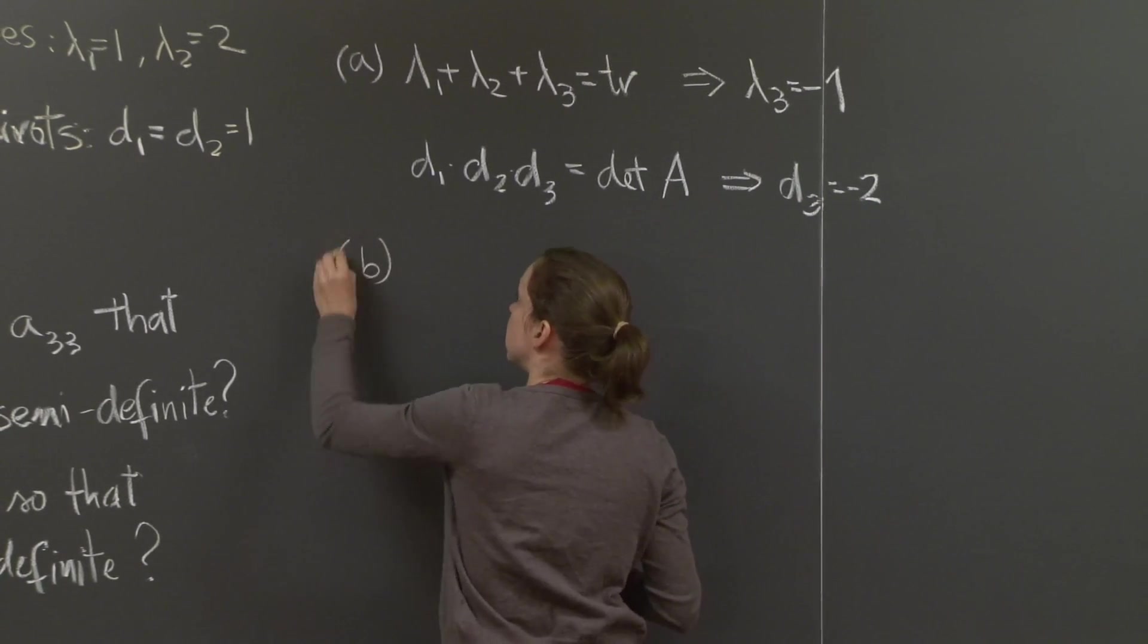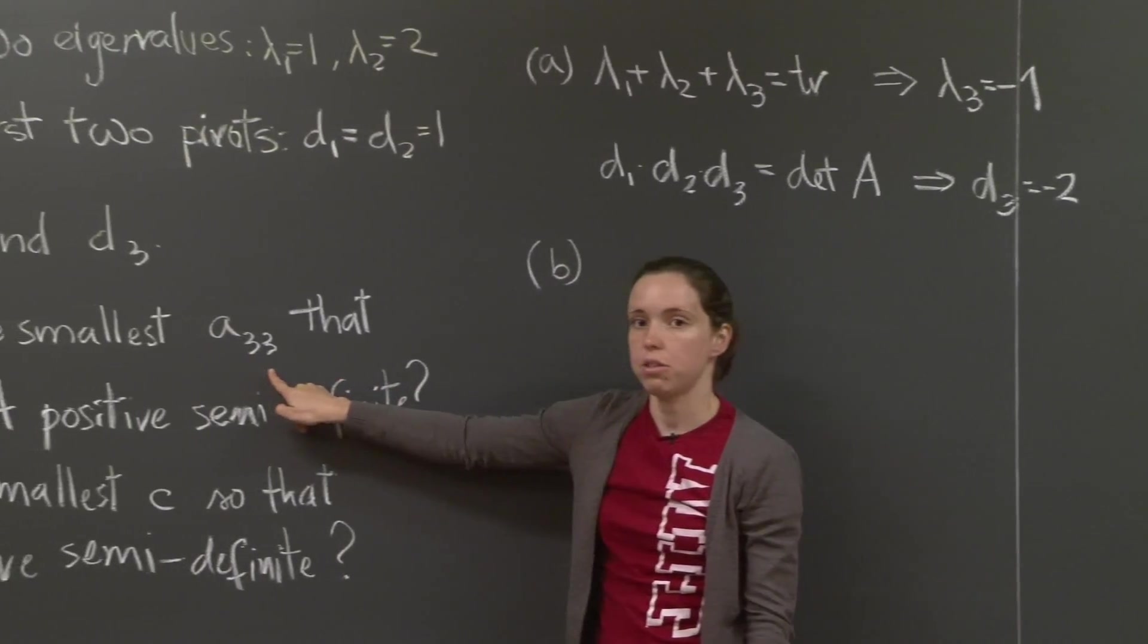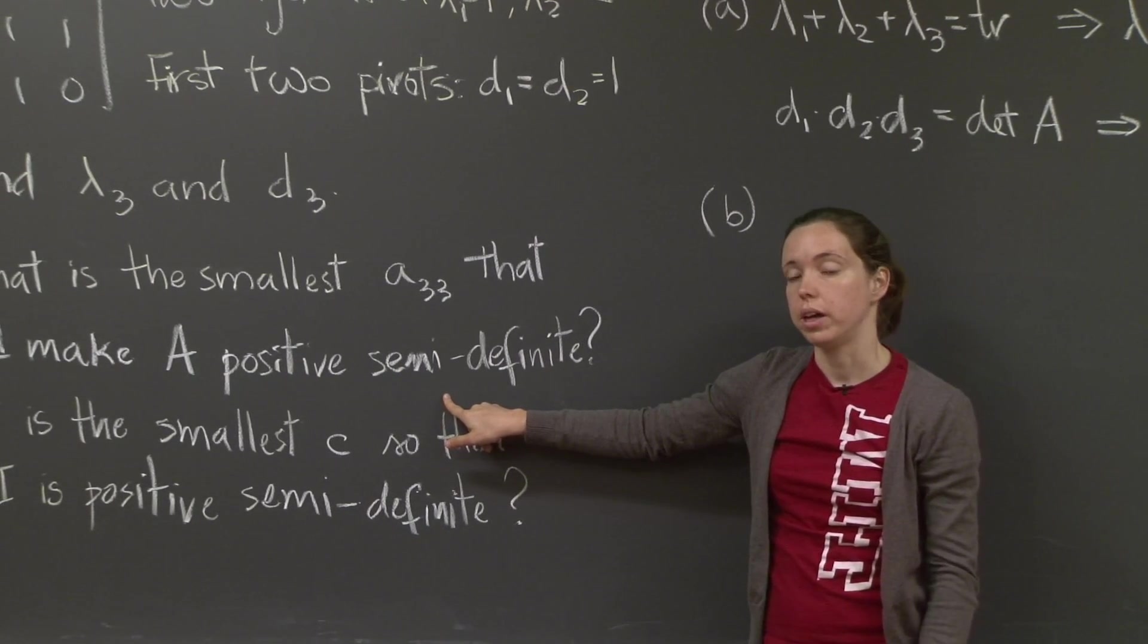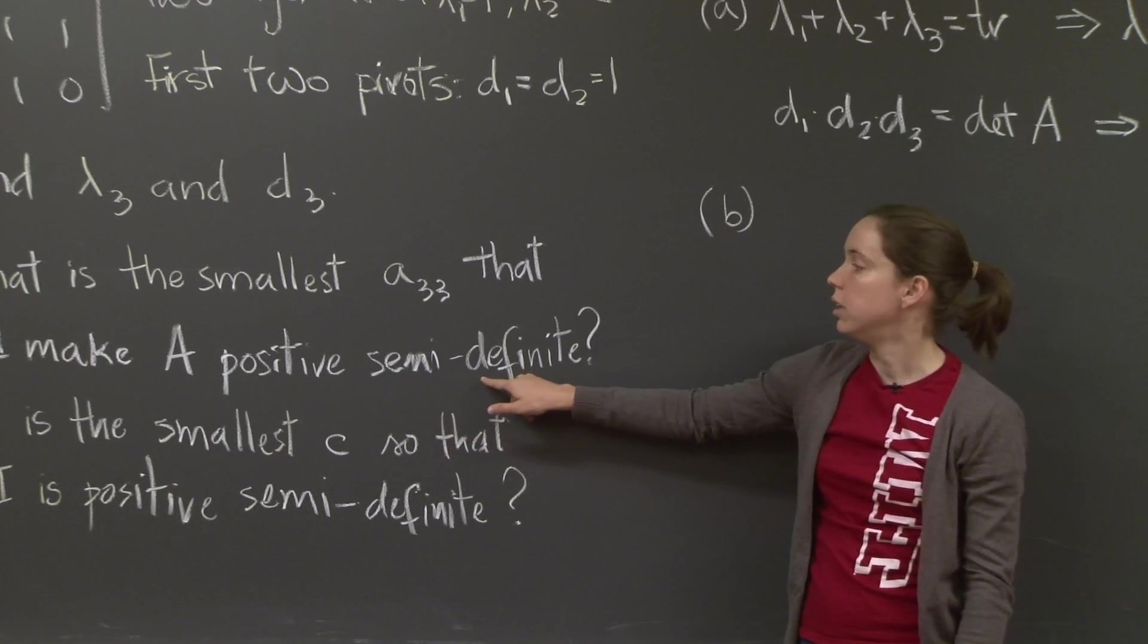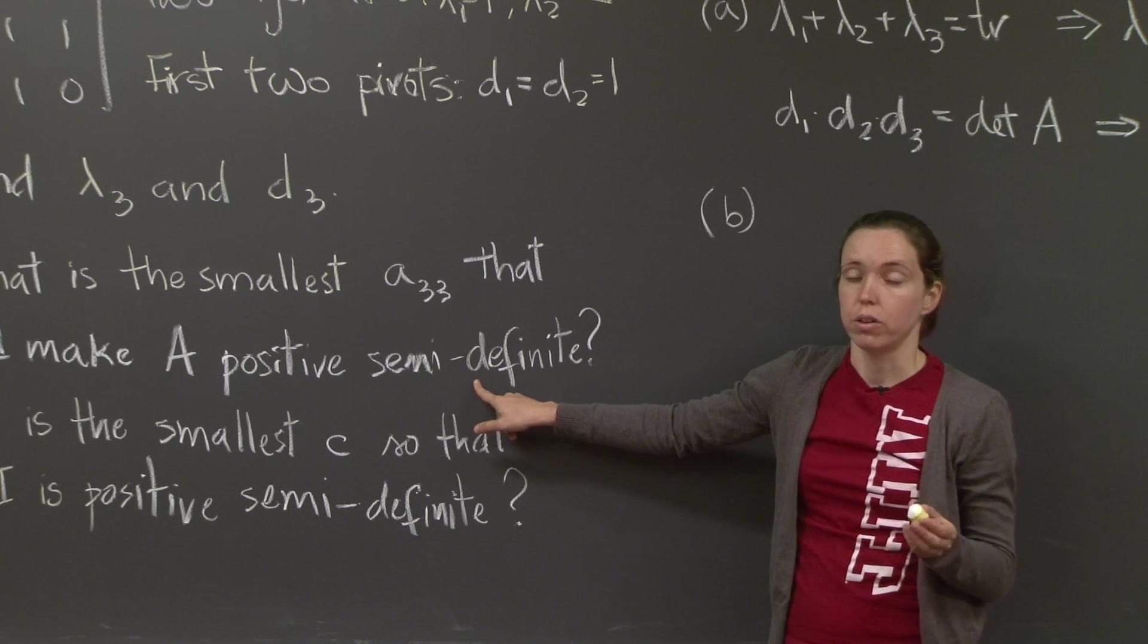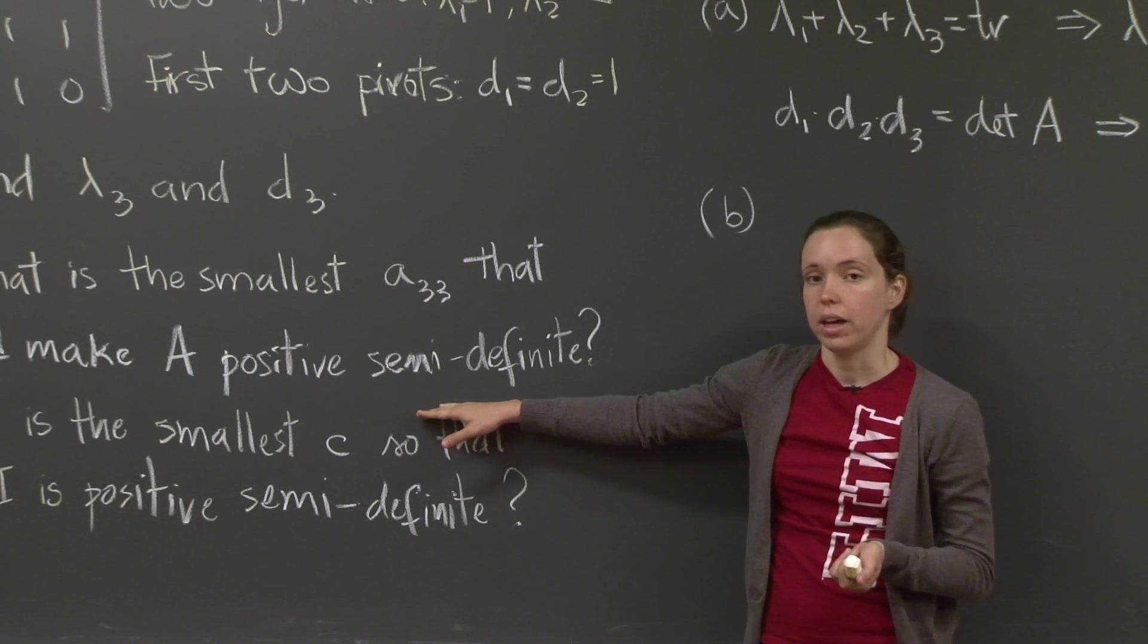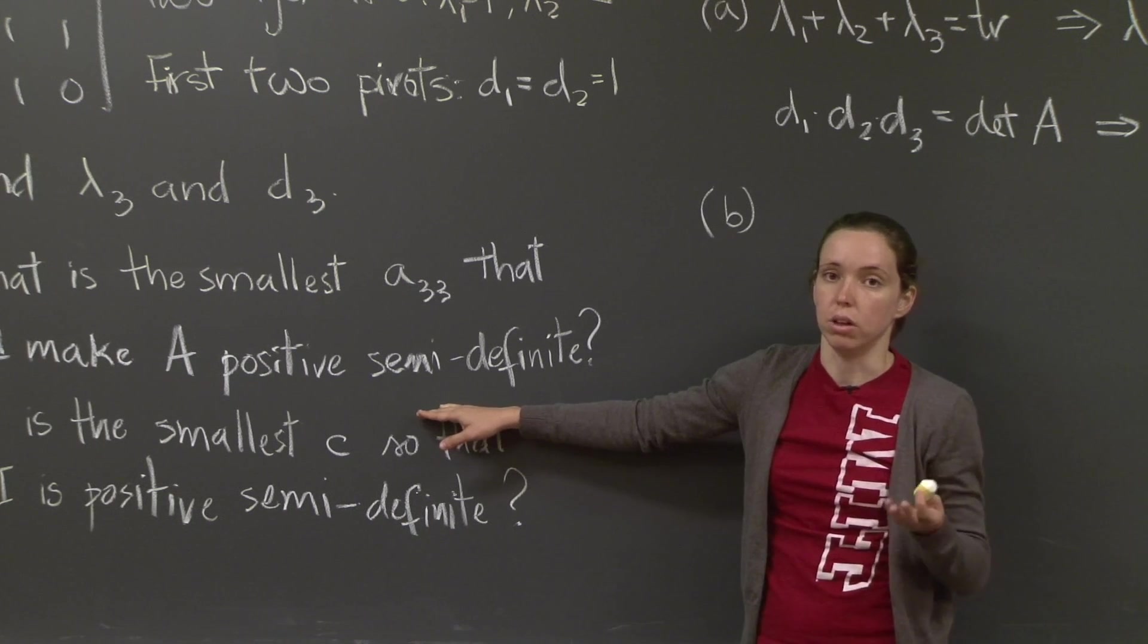Let's do part B. What is the smallest A3,3 entry that would make the matrix positive semi-definite? Well, first of all, note that A is not positive semi-definite yet. The eigenvalues are 1, 2, and minus 1. Minus 1 is negative, so the matrix is not positive definite and not even positive semi-definite. Positive semi-definite means that all the eigenvalues will be either positive or 0, that is, non-negative.